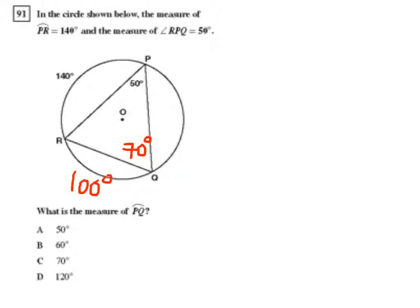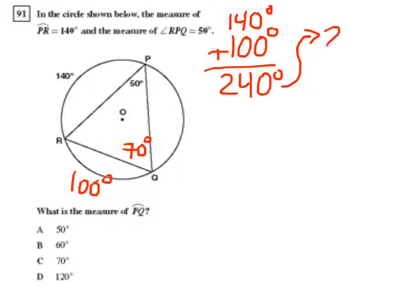By that same token, I know that the number of degrees going all the way around the circle is 360. So if I add the 140 from arc RP to the 100 degrees from arc RQ, and then subtract the result, 240 degrees, from 360 degrees, I'll get the measure of the other arc. So 360 minus 240 is 120 degrees.